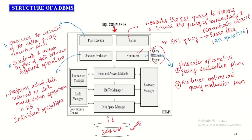Initially, the SQL command is received by the parser, which breaks down the query into a number of tokens. It ensures whether the query is syntactically and semantically correct. If the query does not have any errors, it converts the SQL query into parse trees constructed with relational algebraic operators. These parse trees are then given as input to the query optimizer, which generates several alternative query evaluation plans in the form of relational algebra and produces an optimized evaluation plan out of the many alternatives.